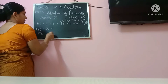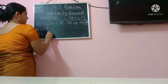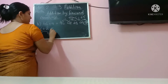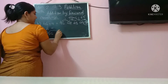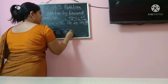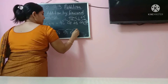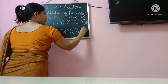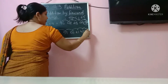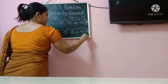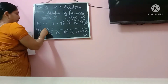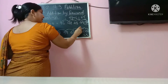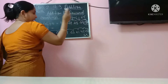So starting from 56, then next one is 57, then 58, 59, 60, 61, 62, 63, and 64. First step, second step, third step, fourth step, fifth step, sixth step, seventh step and eighth step.